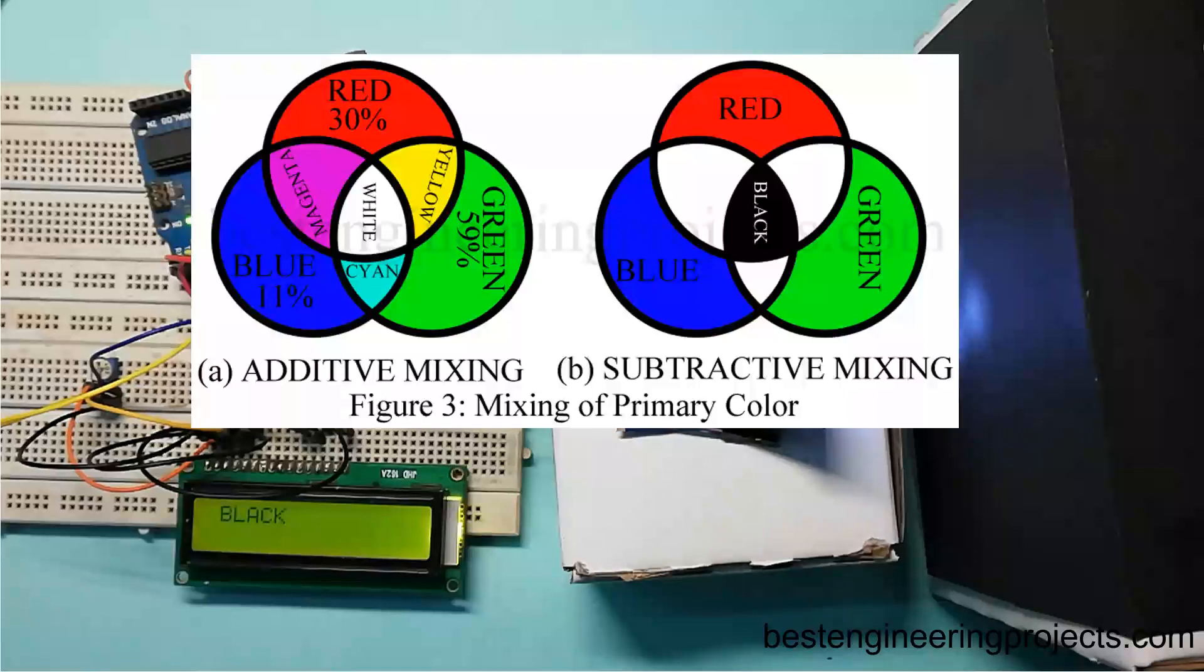Let's take an example: white light can be produced by mixing 30% red, 59% green, and 11% blue. Similarly, all other colors can be produced by suitably mixing the primary colors as shown in the figure.